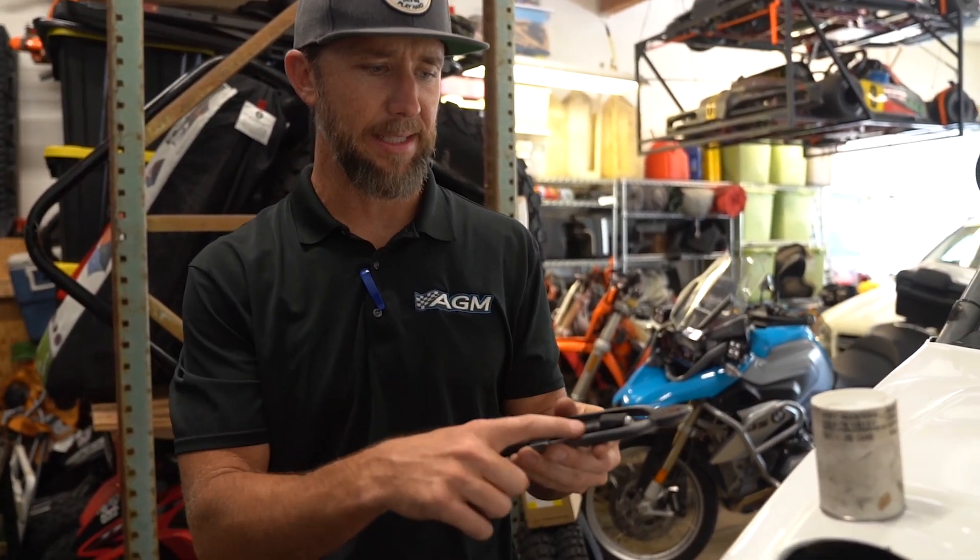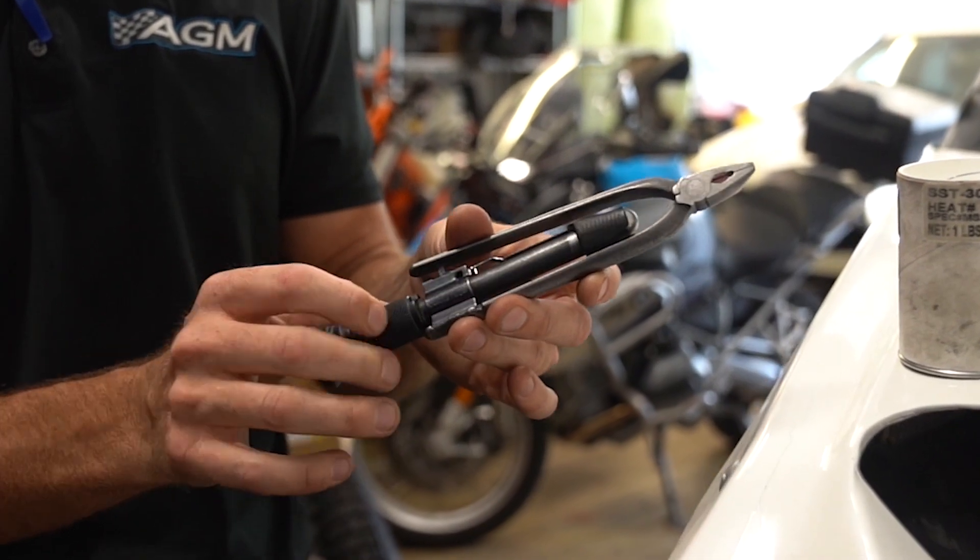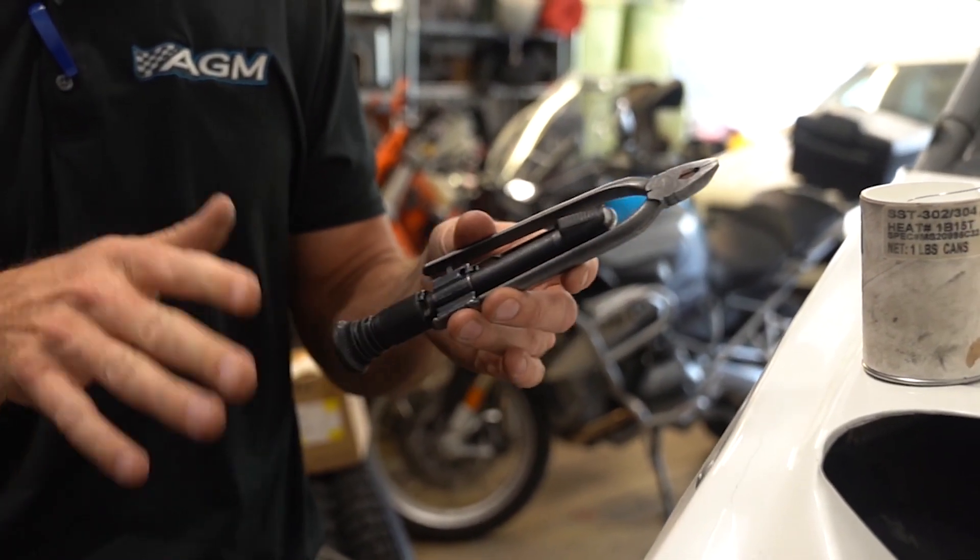The other thing you want to get is a set of safety wire pliers. Ideally, you'd get a reversible set. More on that in a little bit.